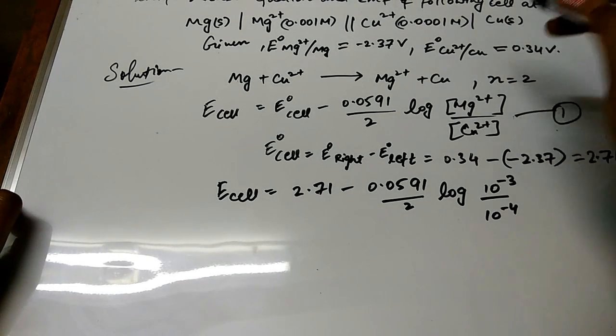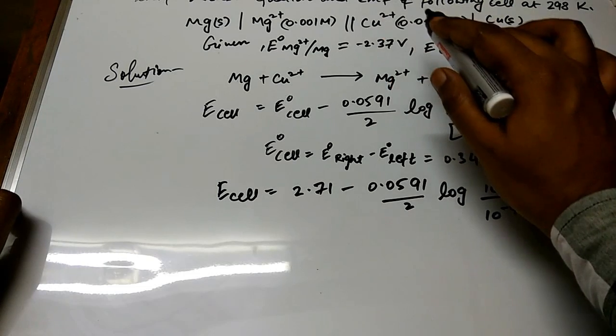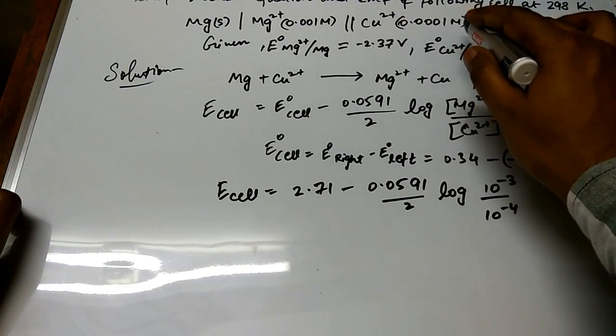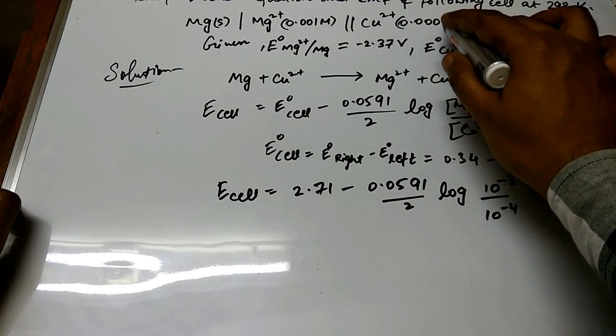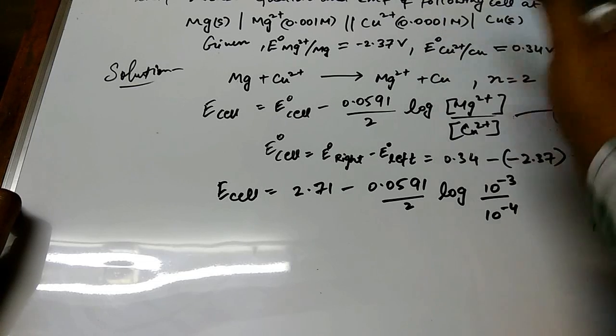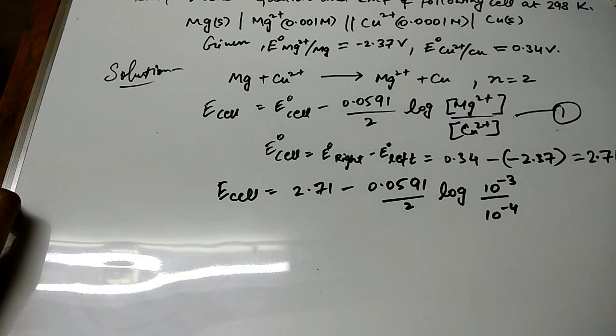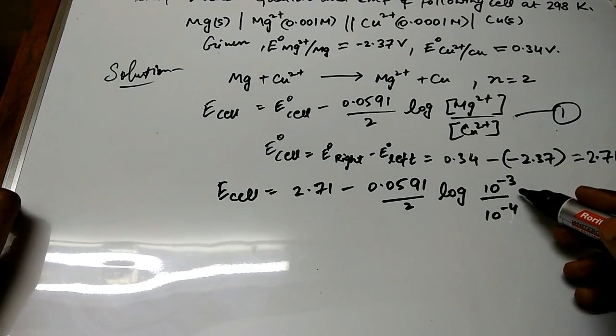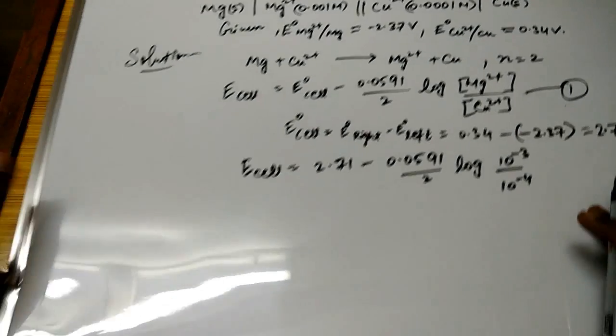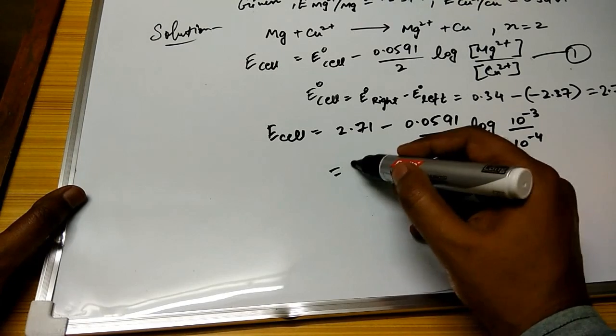Because how come this 10^-4 came? You can see very easily the values of this Cu²⁺ and Mg²⁺ in molar is given. 0.0001 will become 10^-4 and 0.001 will become 10^-3. So I have put these values over here.